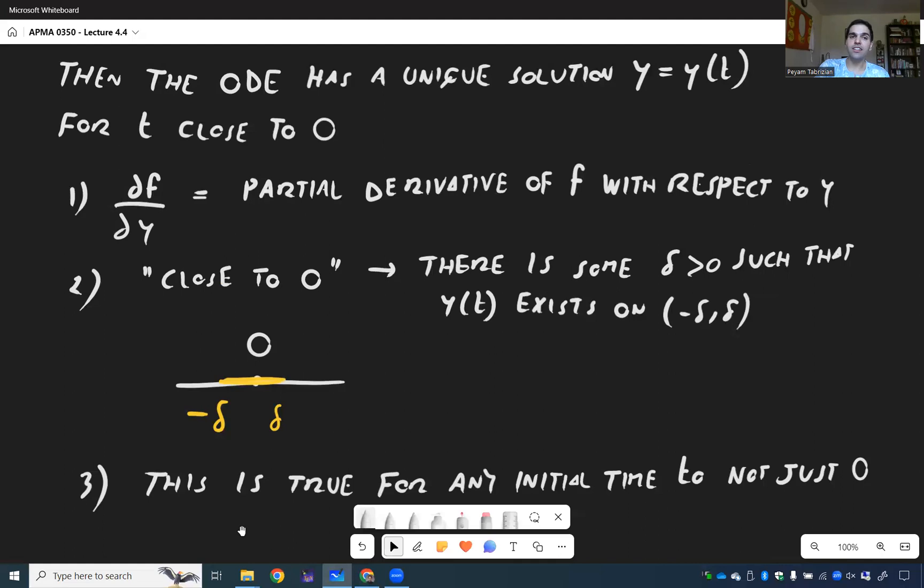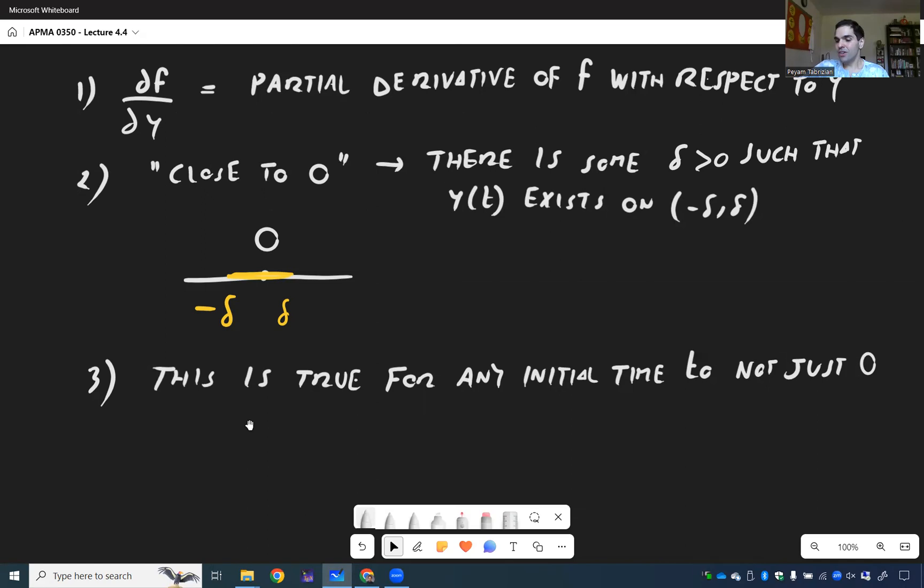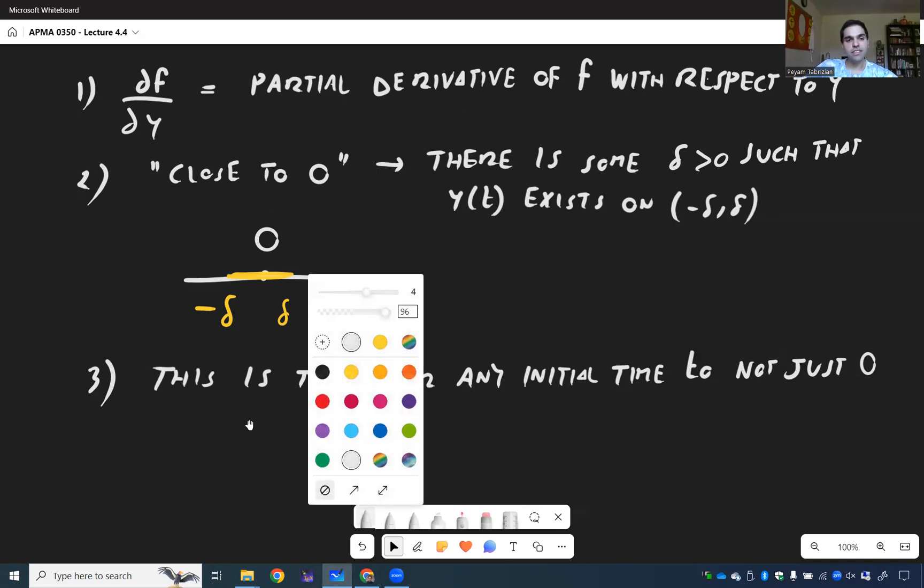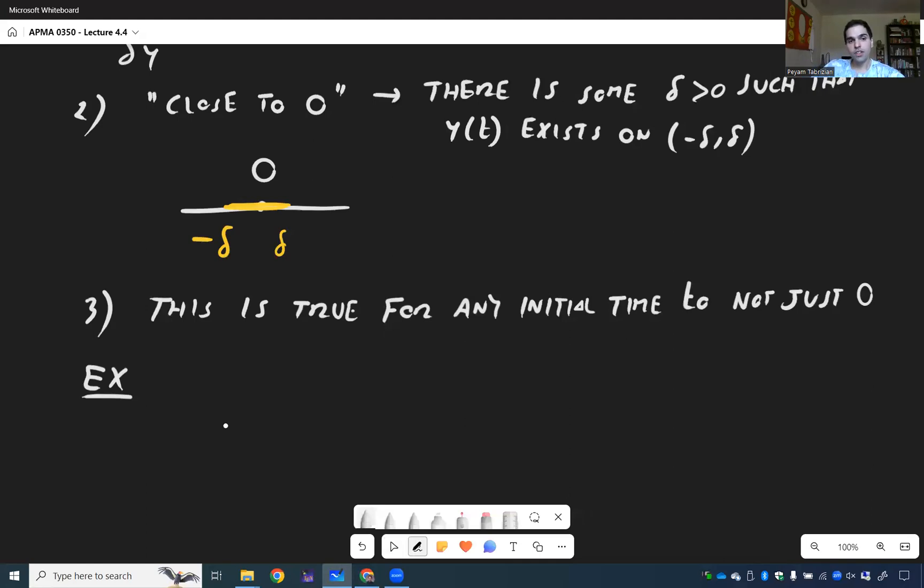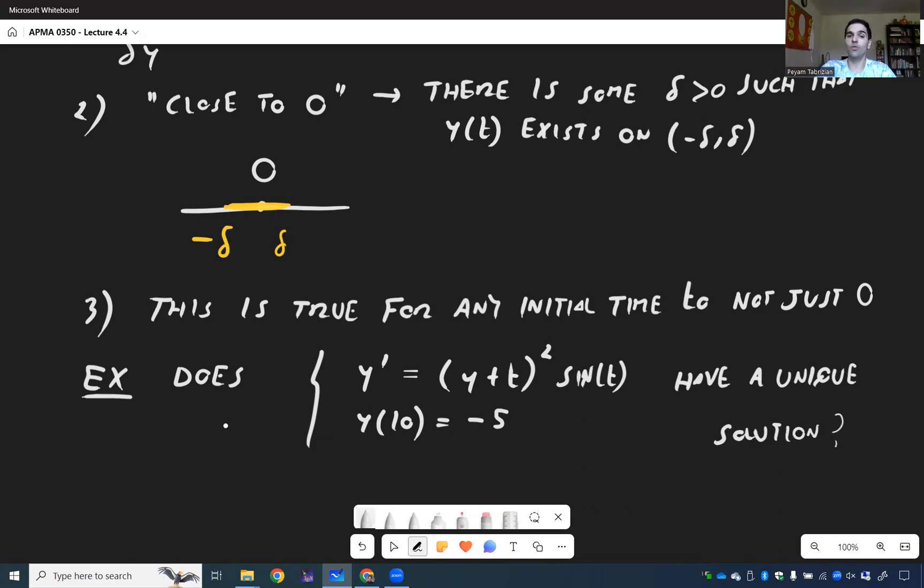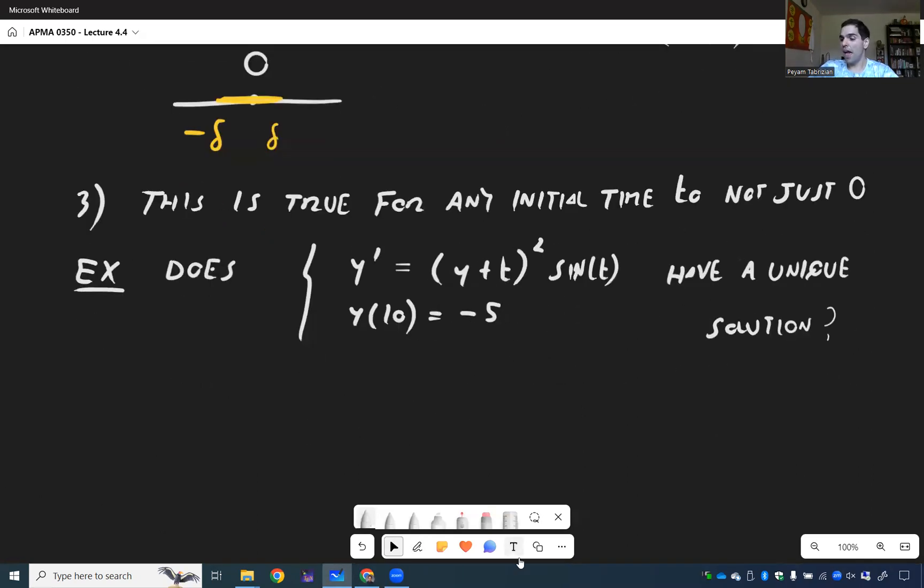So let's discuss this a little bit now that hopefully it's a bit clearer what this theorem says. So first of all, again, what makes this so nice is that we at least know there's a solution to ODEs without solving them. So the question, for instance, is does this ODE have a solution? Again, very scary ODE: y' equals y plus t² sin(t) with initial condition y of 10 equals minus 5. Have a unique solution? Again, you don't even need to solve it to figure out whether it has a solution. You just need to look at the function and its partial derivative.